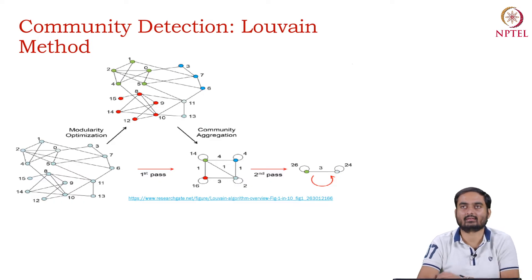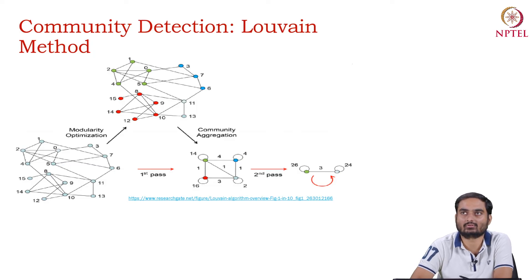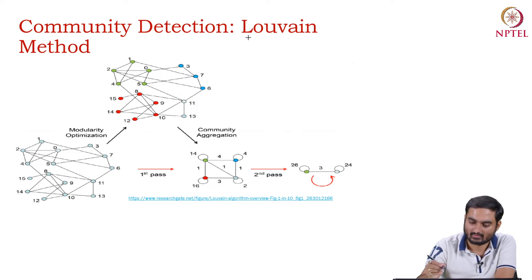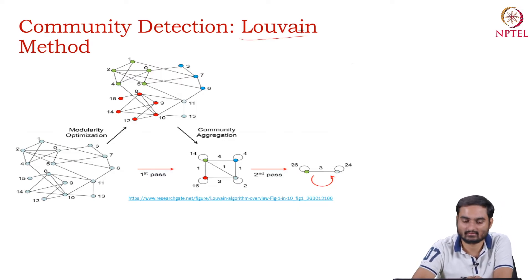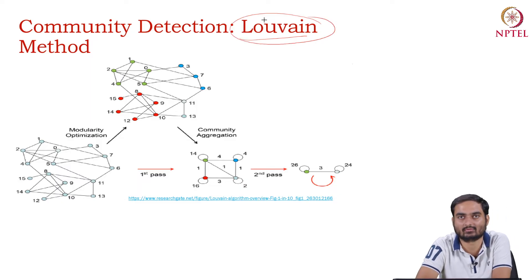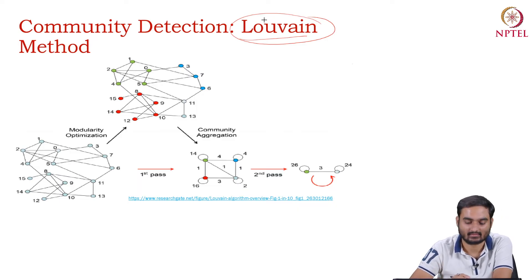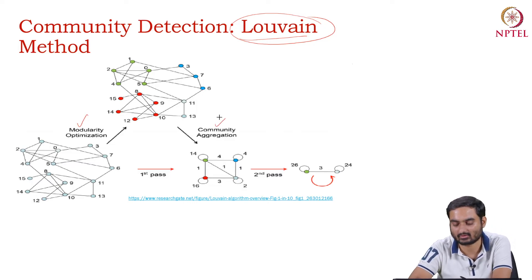Fast greedy has problems: it is a very ad hoc way, and you also need to decide among different realizations and iterations. So in 2008–2009, the Louvain method was proposed, which is by far one of the best methods for disjoint community detection using modularity maximization. In the Louvain method, there are two steps: the first step is called modularity optimization and the second step is called community aggregation.